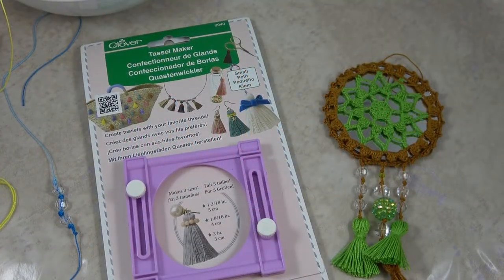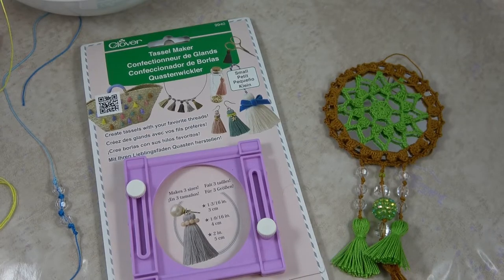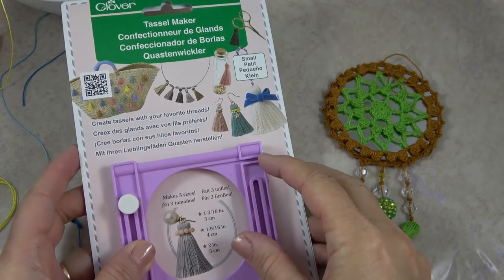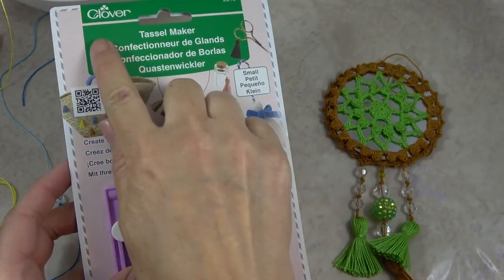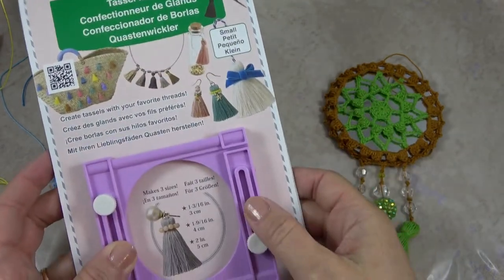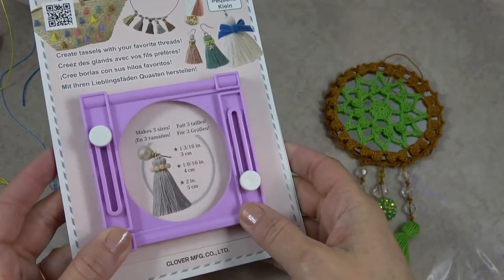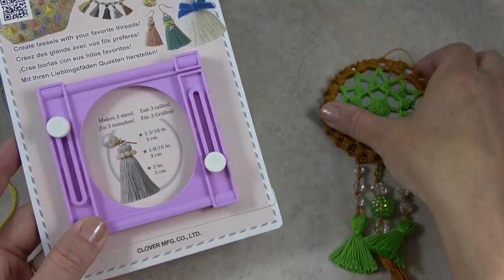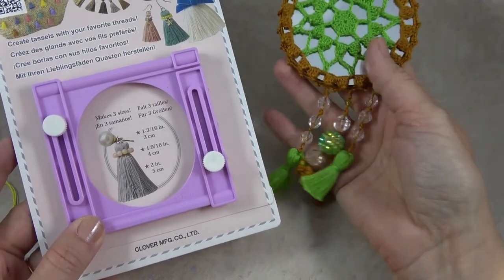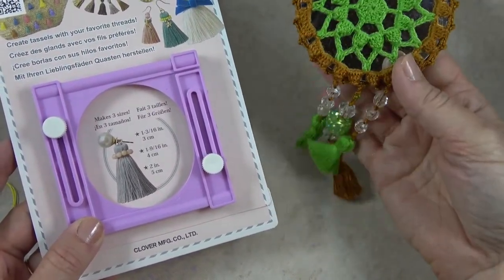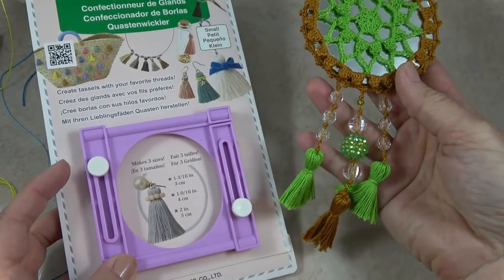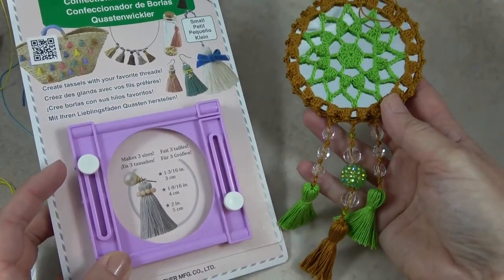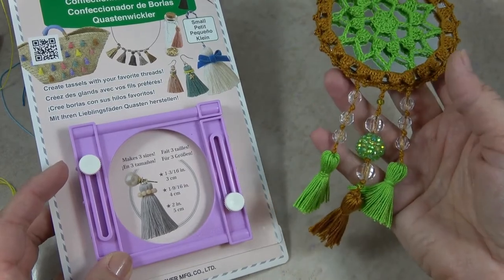Hi, I'm Jennifer of Celtic Knot Crochet and today in this video I'm going to show you how to make a small tassel with the Clover Tassel Maker. It comes like this in the package. I used it to make tassels for my free pattern that's on my blog, the Fairy Garden Mandala. You can find the pattern and a video tutorial on my YouTube channel Celtic Knot Crochet dot com.